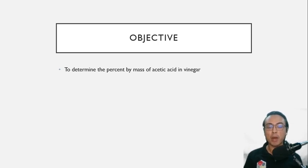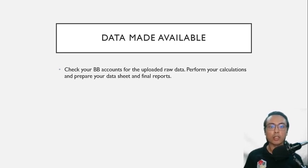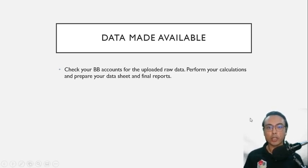Your objective in this experiment is to determine the percent by mass of acetic acid in vinegar. Uploaded to your Blackboard accounts are your raw data — you are already given the values for the volume and concentration of the titrants, and you are tasked to determine the percentage by mass of acetic acid in your vinegar samples. Show all solutions, prepare your data sheet and final report for submission today.